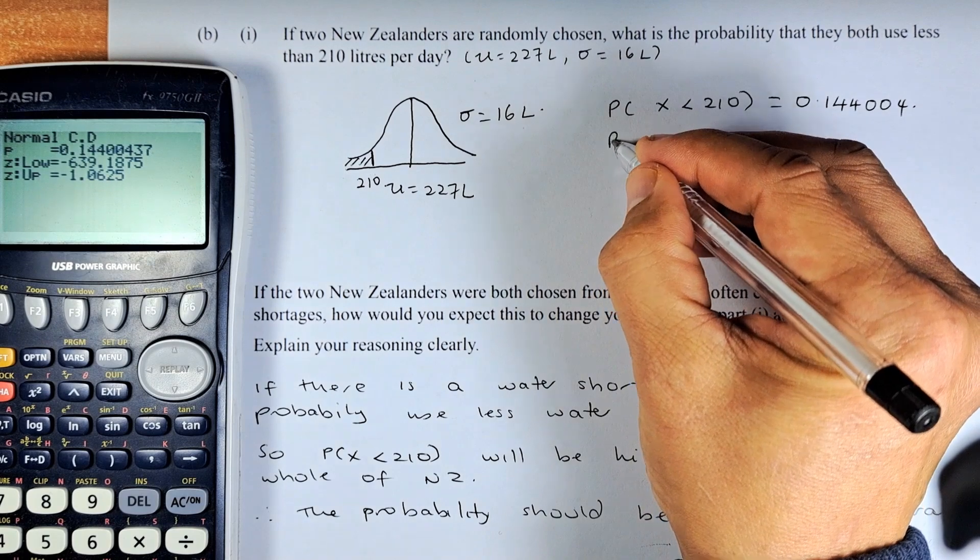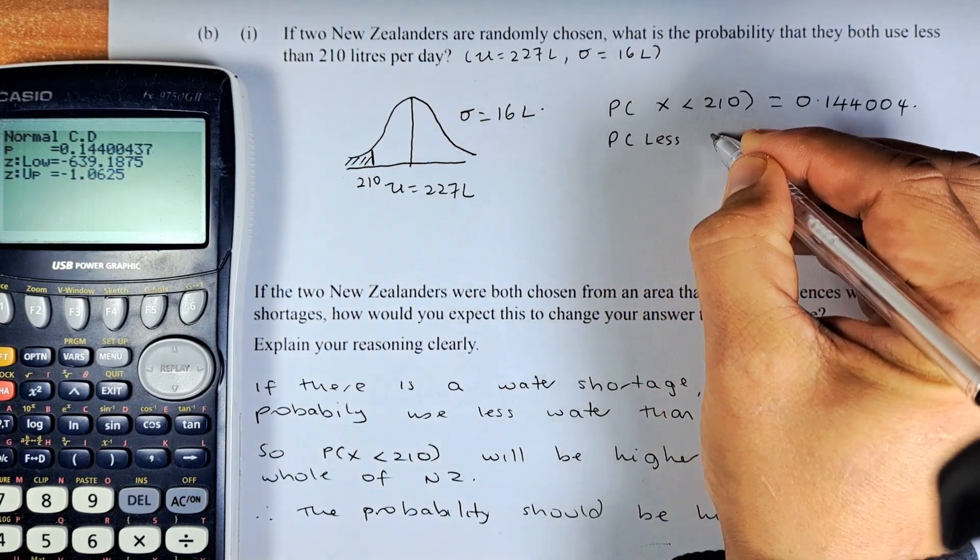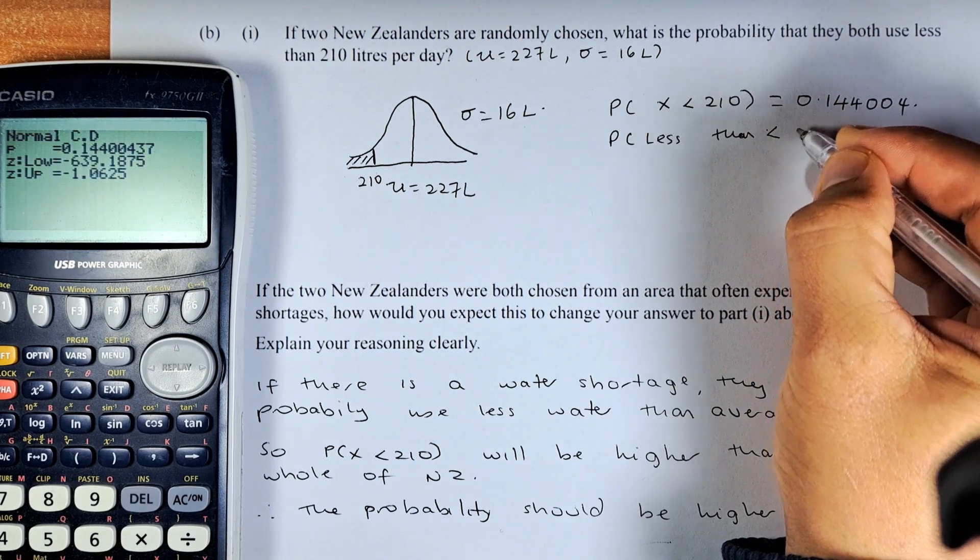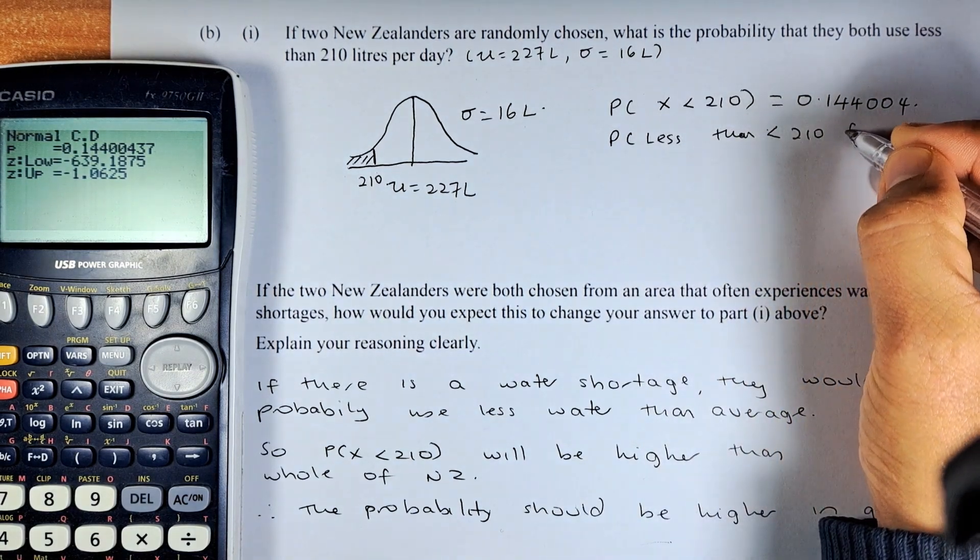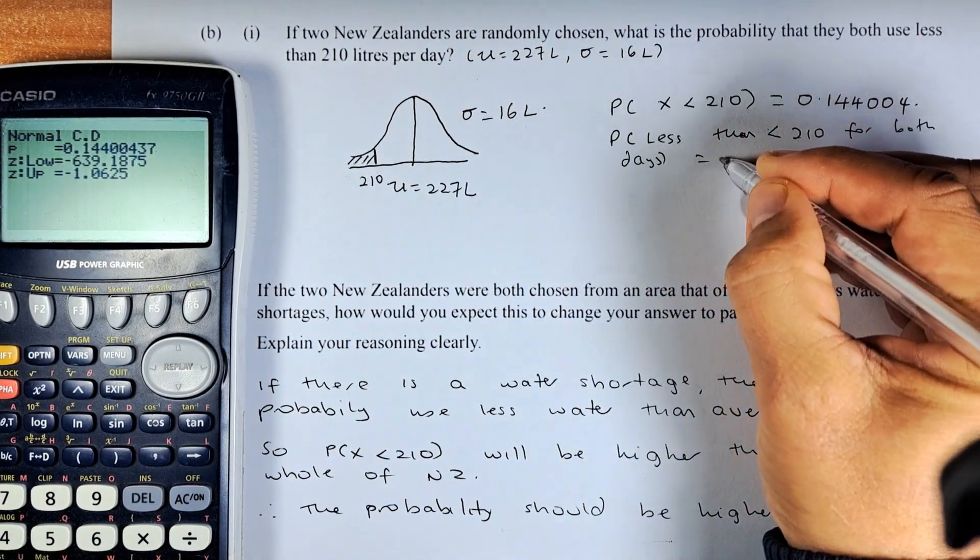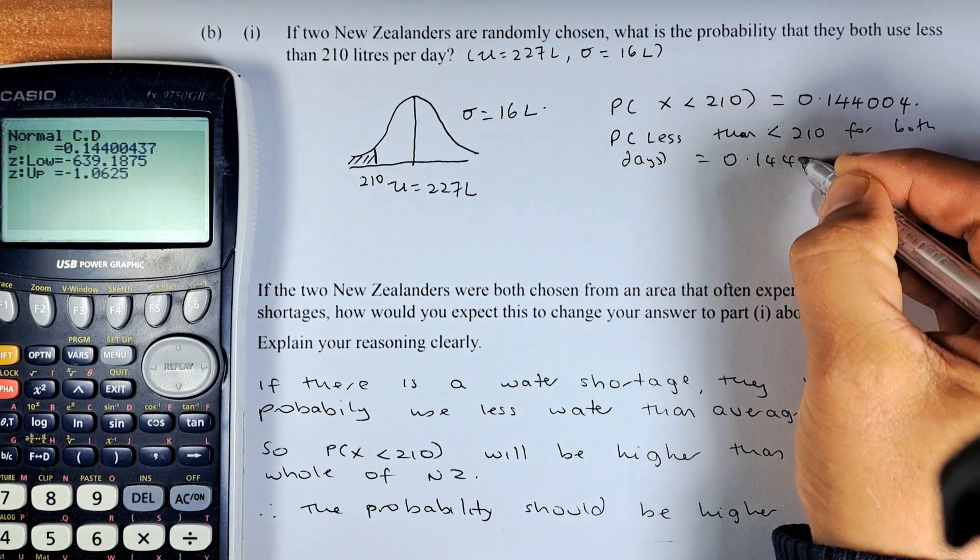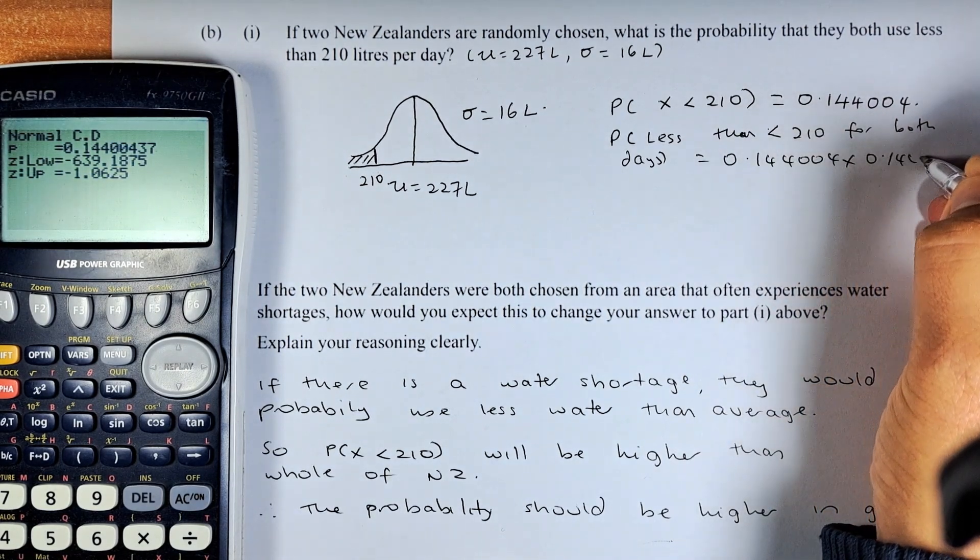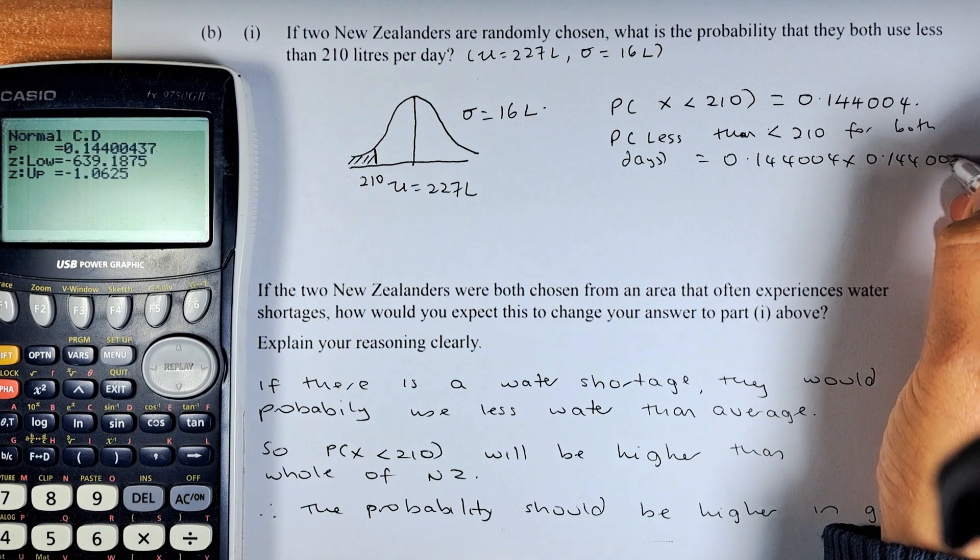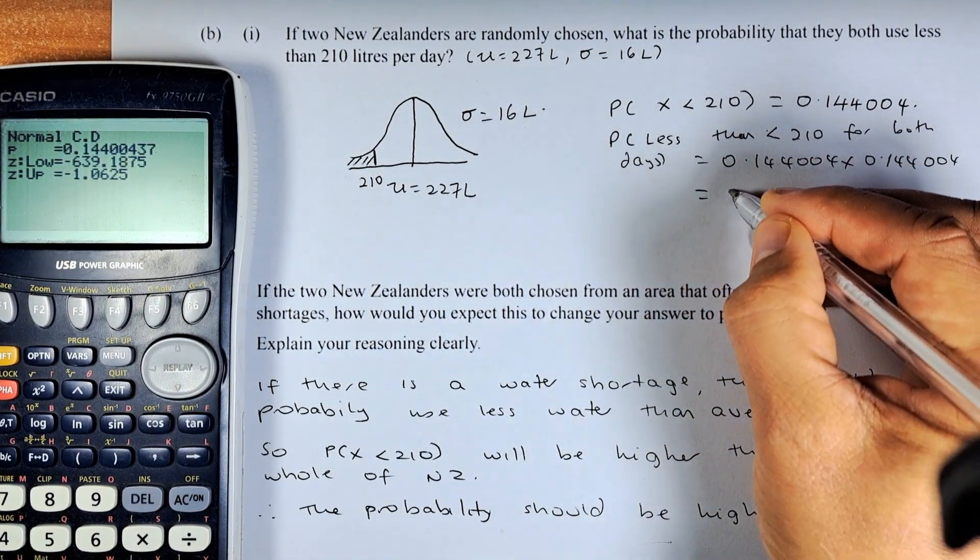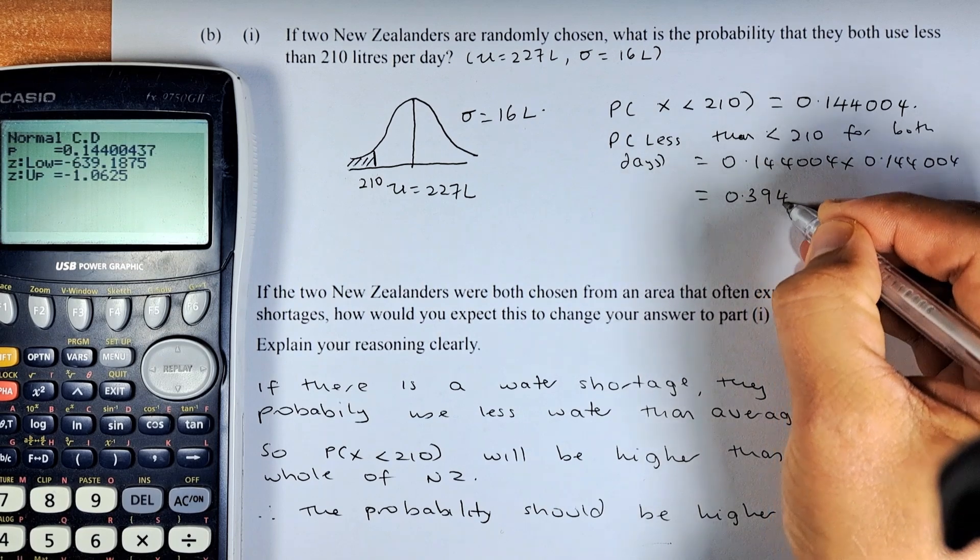So because there are two days, so probability less than 210 for both days, will be that number 0.144004 multiplied by 0.144004. Put in your calculator and the answer is going to be 0.03944.